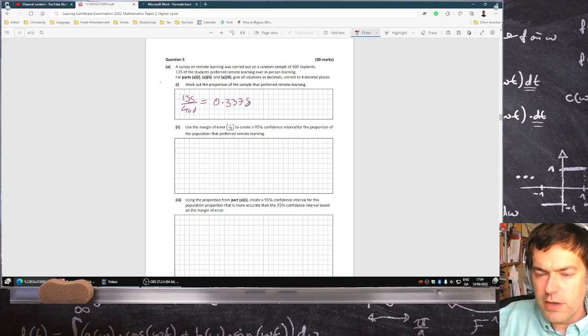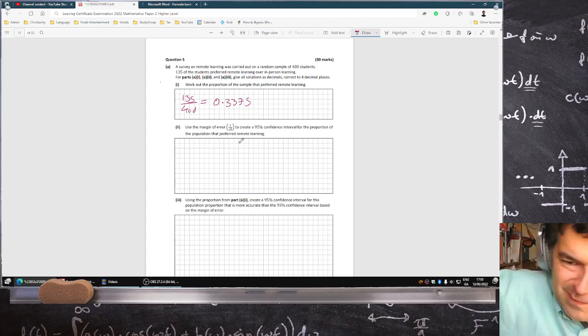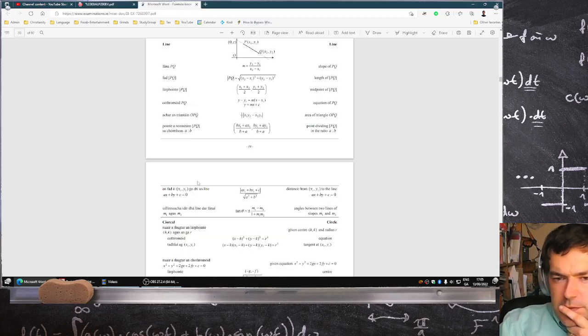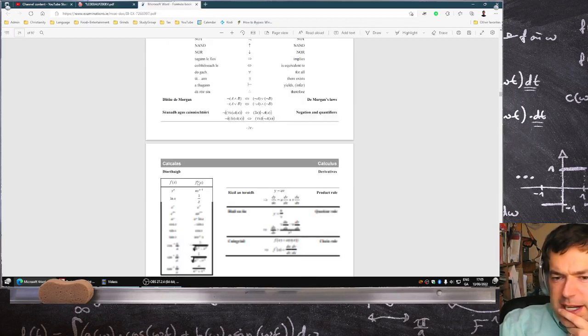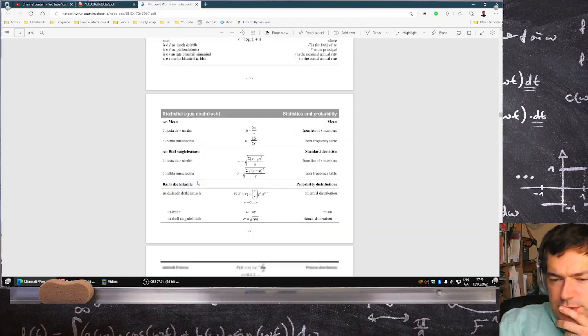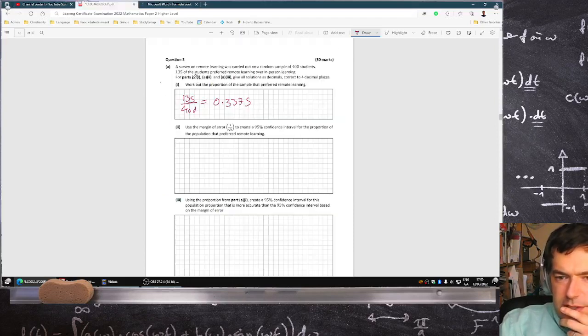Use the margin of error 1 over root n to create a 95% confidence interval for the proportion of the population that preferred remote learning. Now there are two formulas for this. I think the one in the formula book is a little bit more accurate, but there's a less accurate one that is often used in the maths books which is just root n. I'll show you both anyways.